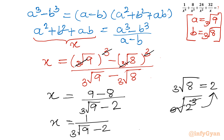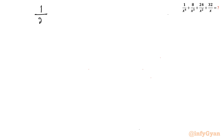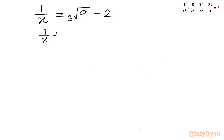Taking the reciprocal of this equation gives 1/x = cube root of 9 minus 2. Adding 2 to both sides: 1/x + 2 = cube root of 9.